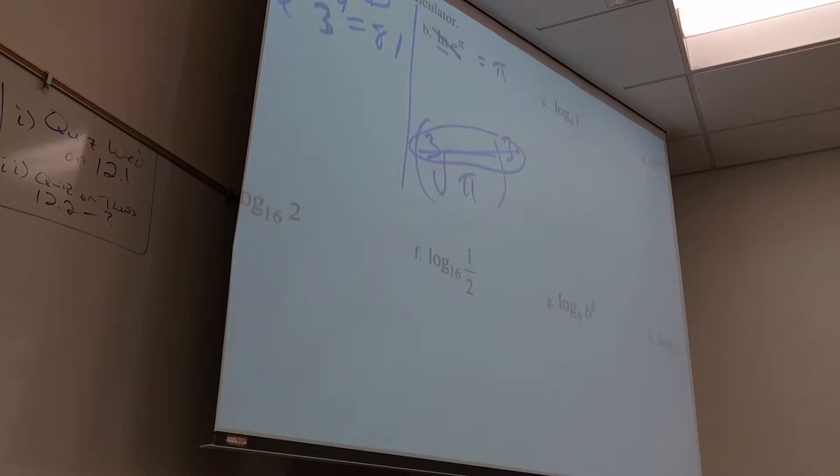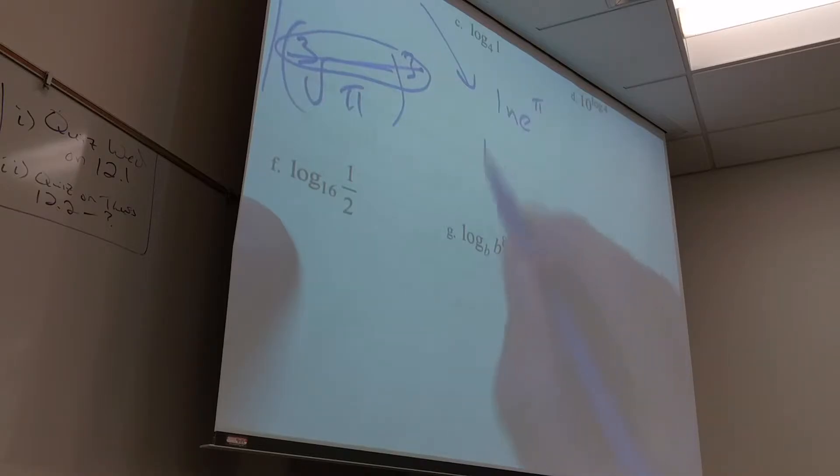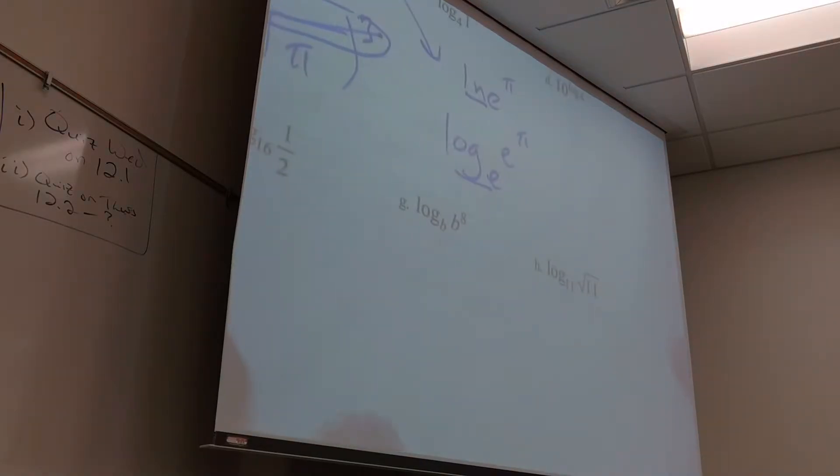Let me show you another way to think of that. ln is log base e right? I replace ln with log base e and then I have e to the π. Now watch, this is kind of a silly question. What power do you put on e to make it become e to the π? It's almost too dumb of a question to answer. Of course the power that e needs is π to become e to the π.